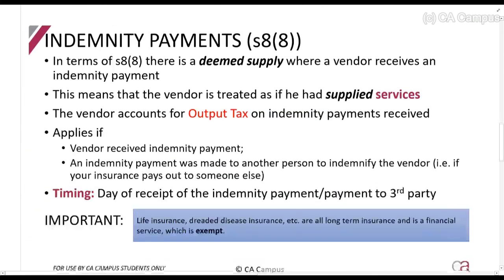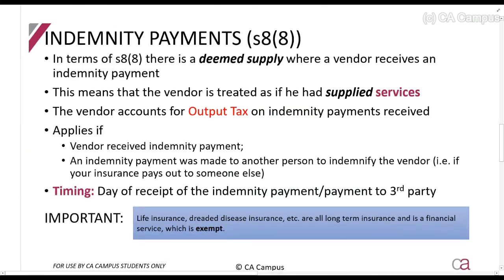The first one we'll talk about is indemnity awards. This section will apply if I receive an indemnity payment. That means, if the insurance company pays me an amount, there will be output tax. They treat it as if you have supplied services. And this will apply in two situations. I receive an indemnity payment - so my computer explodes and the insurance company pays me for it, that situation.